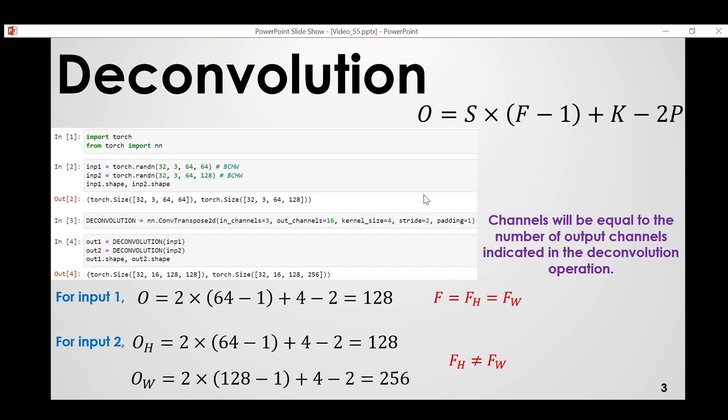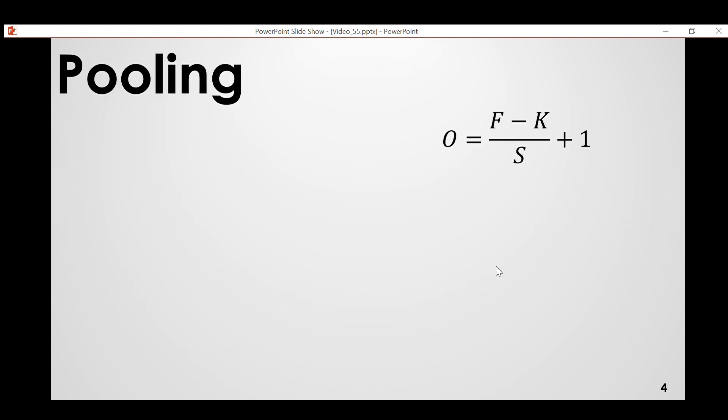I forgot to mention one thing. These are the usual parameters that are used but you can use some additional parameters like dilation, which is again the space between kernel points, and also output padding. So after receiving the output, if you use output padding then the size will change, it will increase a little bit depending on how much padding you are using. But those are not usually used. By default the dilation is one, that means there is no space between the kernel points, and output padding is zero by default. Finally let's focus on pooling.